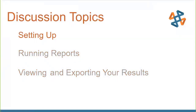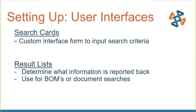To get started, we'll talk about setting these types of reports up. There are really two main things that we need to set up beforehand. First are search cards — these are essentially a custom interface that allows us to input search criteria. Search cards are completely customizable so you can put in any information that you want. Second are result lists, which determine what that reported information looks like — what information do we actually want to include. This could be used for bill of material returns or document searches.